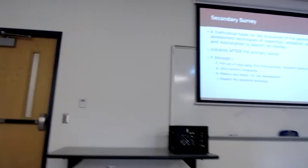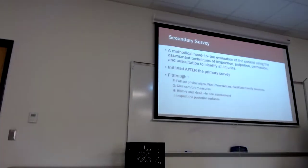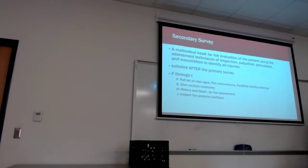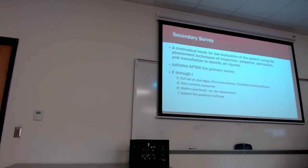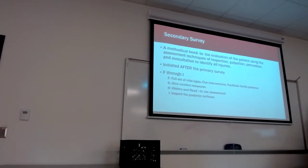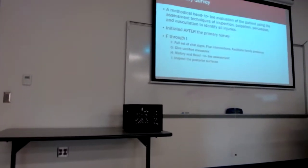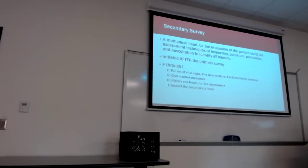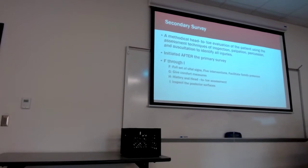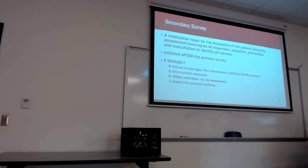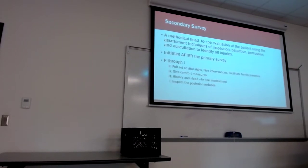Know the primary survey — it's that simple. In the secondary survey, we cover F through I. F is where we get our first full set of vital signs, we have five interventions, and we facilitate family presence. That one tends to be tough, and I'm not sure why, but it tends to be really tough for nursing in general.